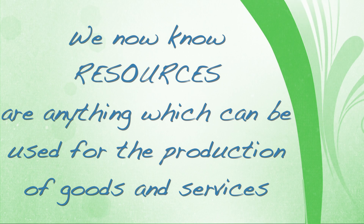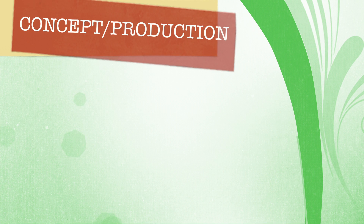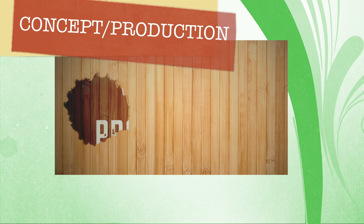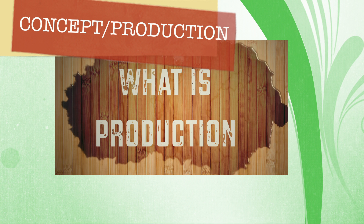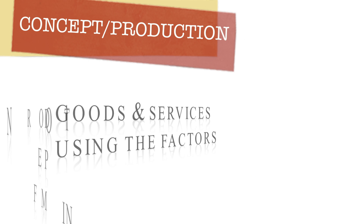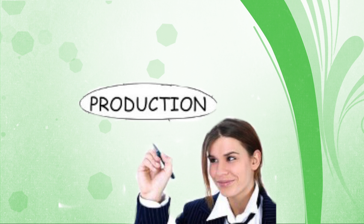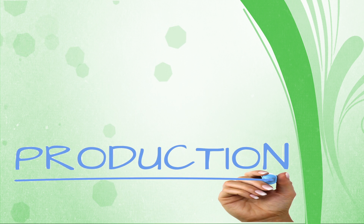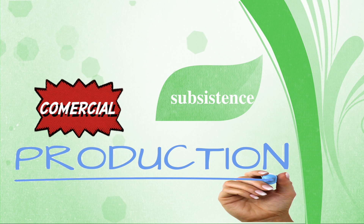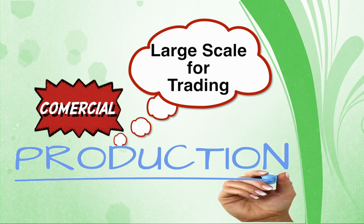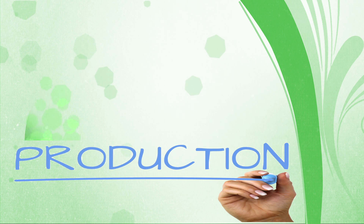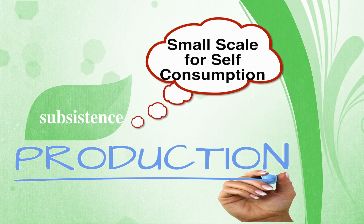Resources are anything which can be used for production of goods and services. Now we are going to look at the concept of production. What is production? Can you see things which are produced at your home? Production is the process of making goods and services using the factors of production. Production creates utility, so production is a very important concept in economics. Production can be both commercial and subsistence. Commercial production is the production of goods and services on a large scale, mainly for trading.